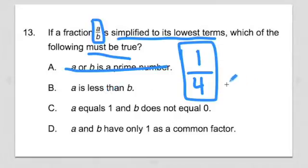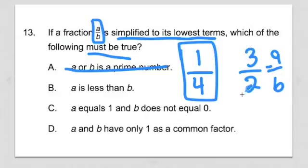A is less than B. Okay. Well, in this case, 1 fourth, a is less than b. But what if it was 3 halves? Well, a in this case, because a is on the top, would be greater than b. That would be the 2. And guess what? 3 halves is reduced to its lowest terms. So this is disproved. A doesn't necessarily have to be less than B.